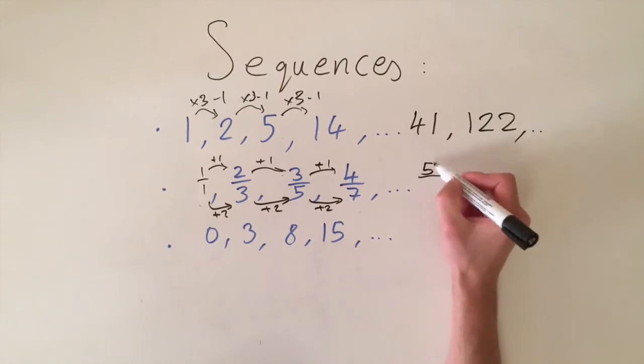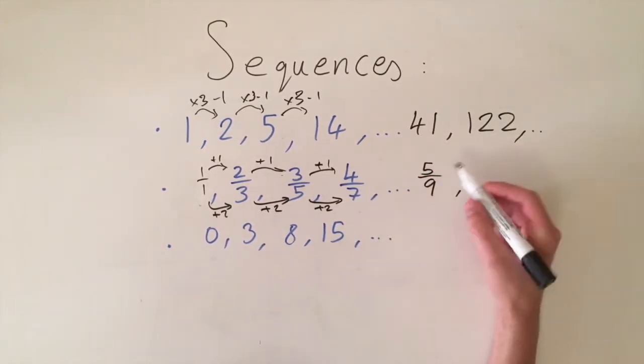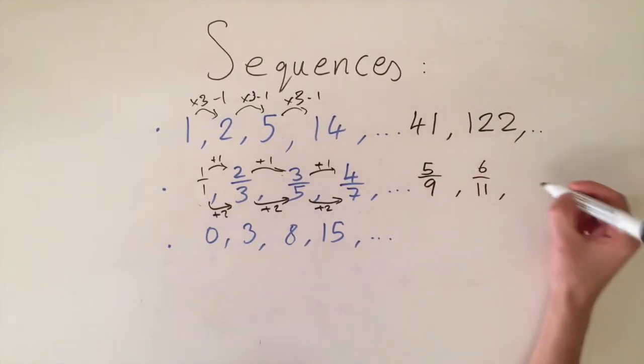So this isn't very well written mathematically but we can still work out what the next numbers are. We just add 1 to the numerator and add 2 to the denominator this gives us 5/9 and then next one for example would be 6/11 and this pattern just carries on forever.